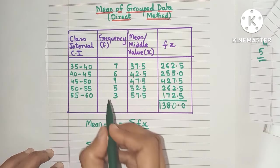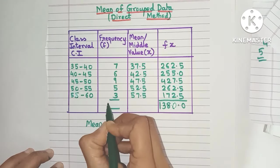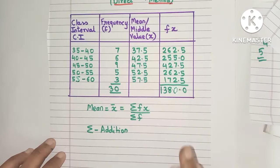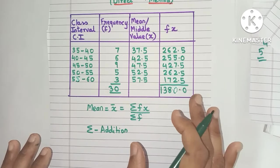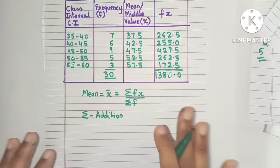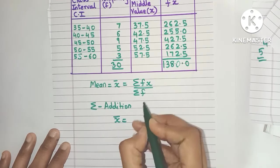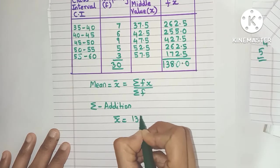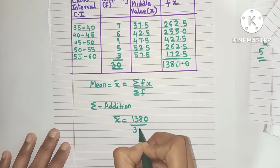Similarly, we need Σf also. Let's add this; you will get the answer is 30. Now that we know the Σfx and Σf values, let's quickly substitute in the formula. We will get mean as 1380 divided by 30.